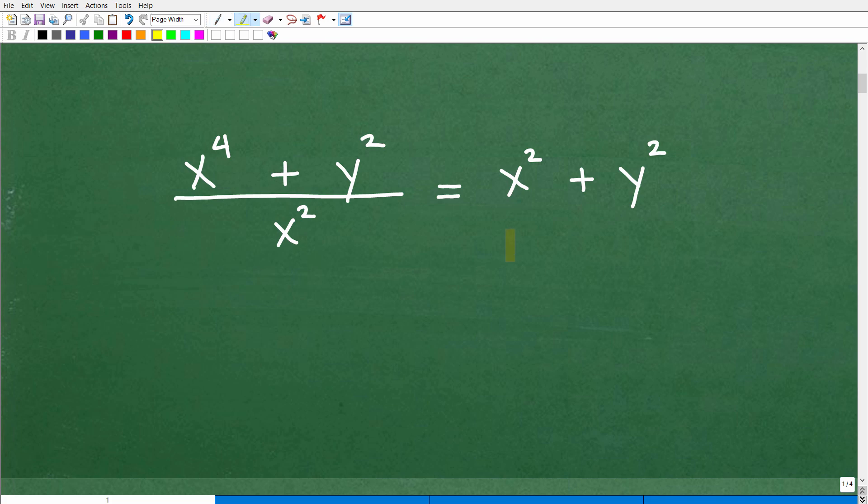So I want to go ahead and simplify this expression. And here is my answer, okay? So I think this is pretty good. And let me ask you, do you think that this is a correct answer? Okay, in other words, I'm thinking, hmm, x squared, x to the fourth. This is x to the fourth, which is the same thing as x squared times x squared. I have an x squared here.